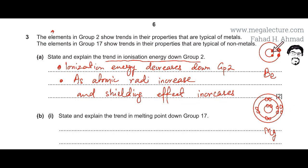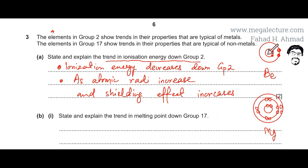Ionization energy is the energy required to remove an electron. Since electrons in smaller atoms are closer to the nucleus — with the positive nucleus right in the middle — and there is less shielding effect, it takes more energy to remove those electrons.